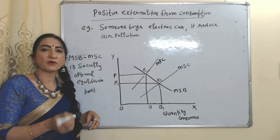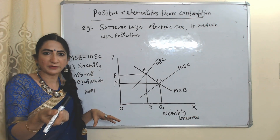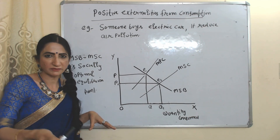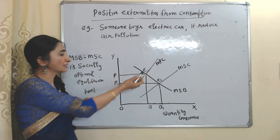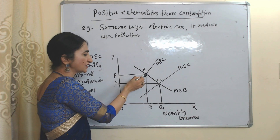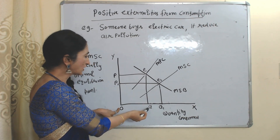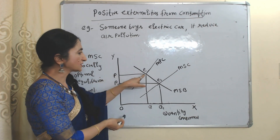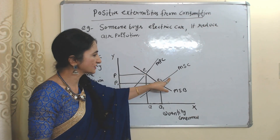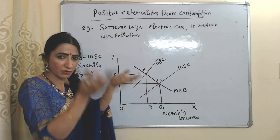Now we will see positive externalities from consumption. Suppose someone buys an electric car — because of the electric car, overall air pollution is reduced, meaning society is receiving a benefit. It will be called positive externality from consumption. In this diagram, we have marginal private cost, marginal social cost, and marginal social benefit. E is our initial equilibrium point without any government intervention, where consumption is OQ and price is OP. At point E, marginal social benefit is more than marginal social cost, meaning society is receiving more benefit from this product.